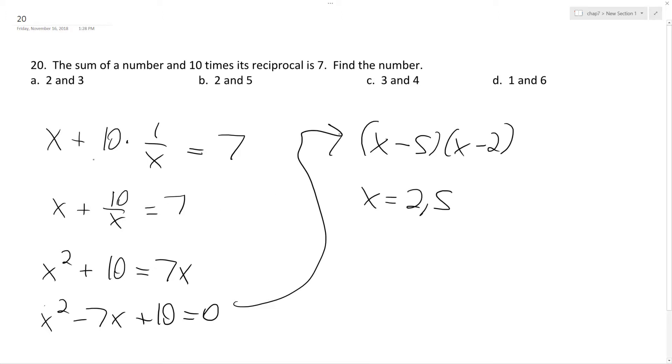So if we have 2, 10 over 2, so that's 2 plus 10 over 2, which is 5. So 2 plus 5 does equal 7. If we have 5, that's 5 plus 10 over 5, which is 2, so 5 plus 2 equals 7. So it's 2 and 5.